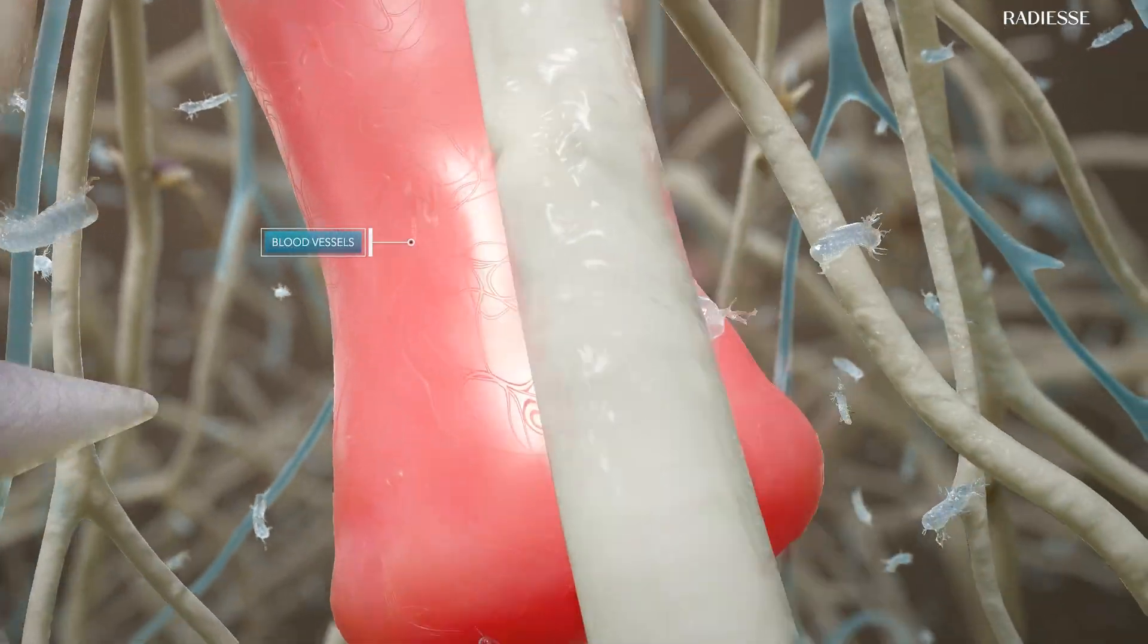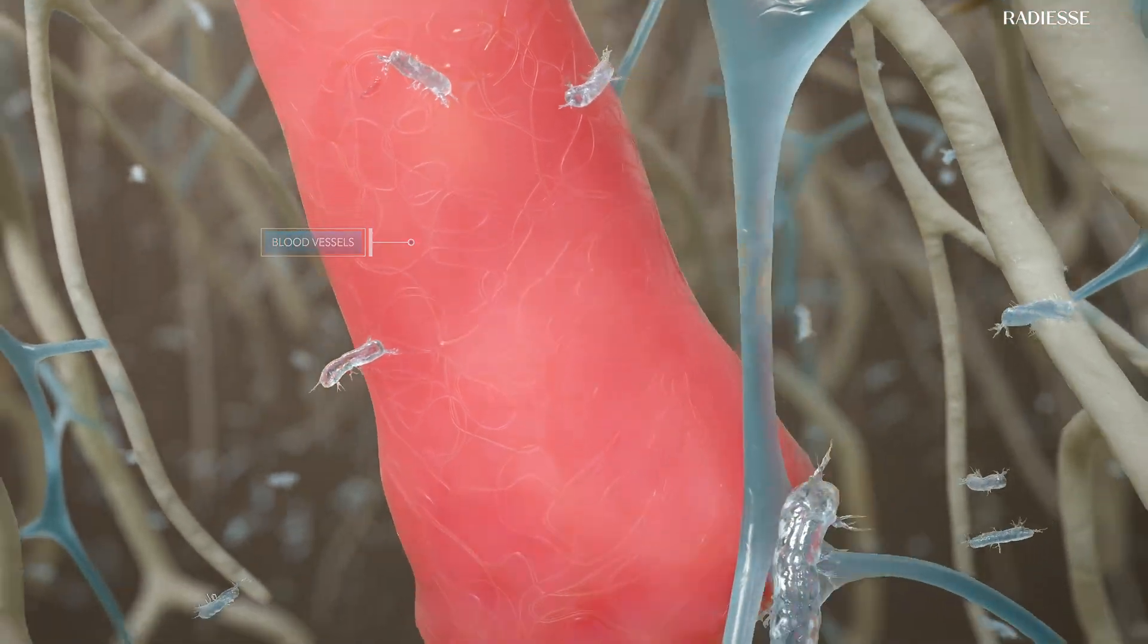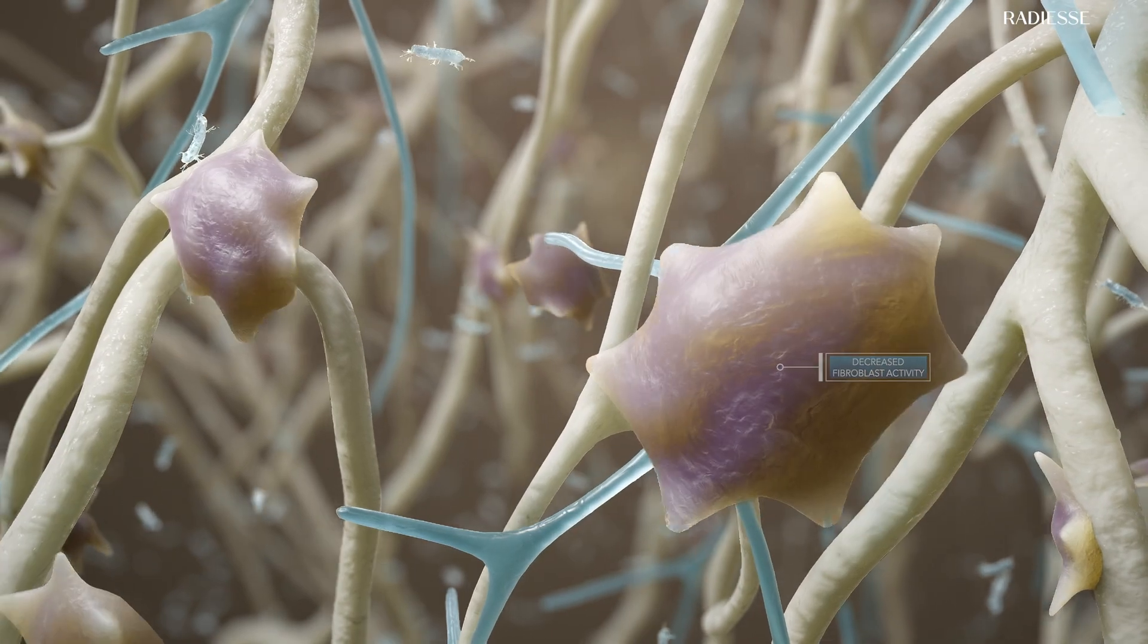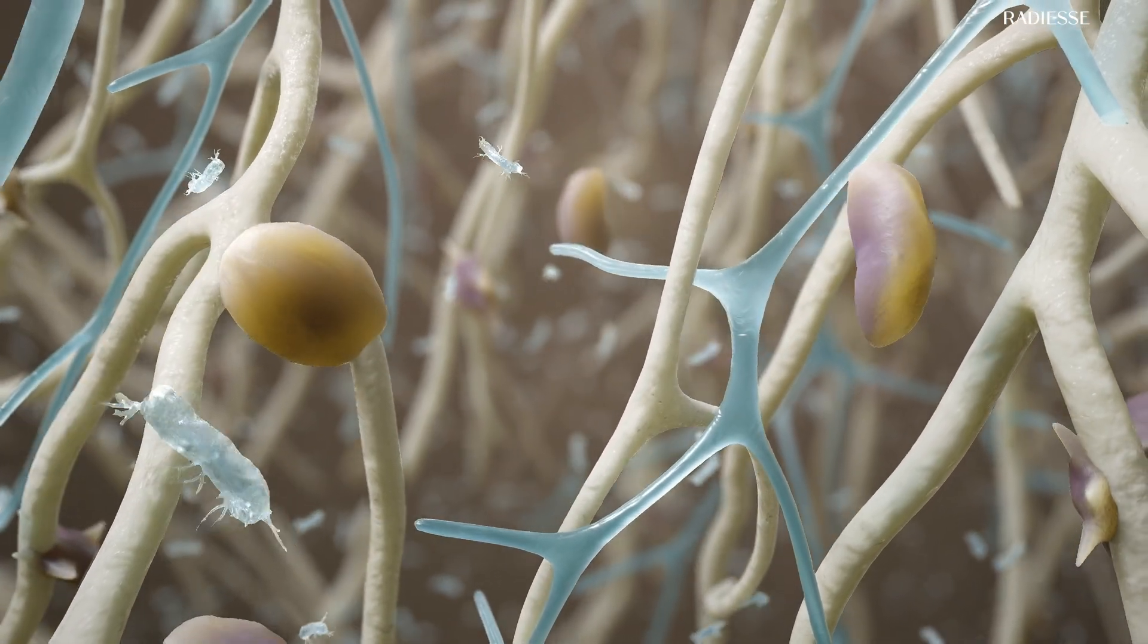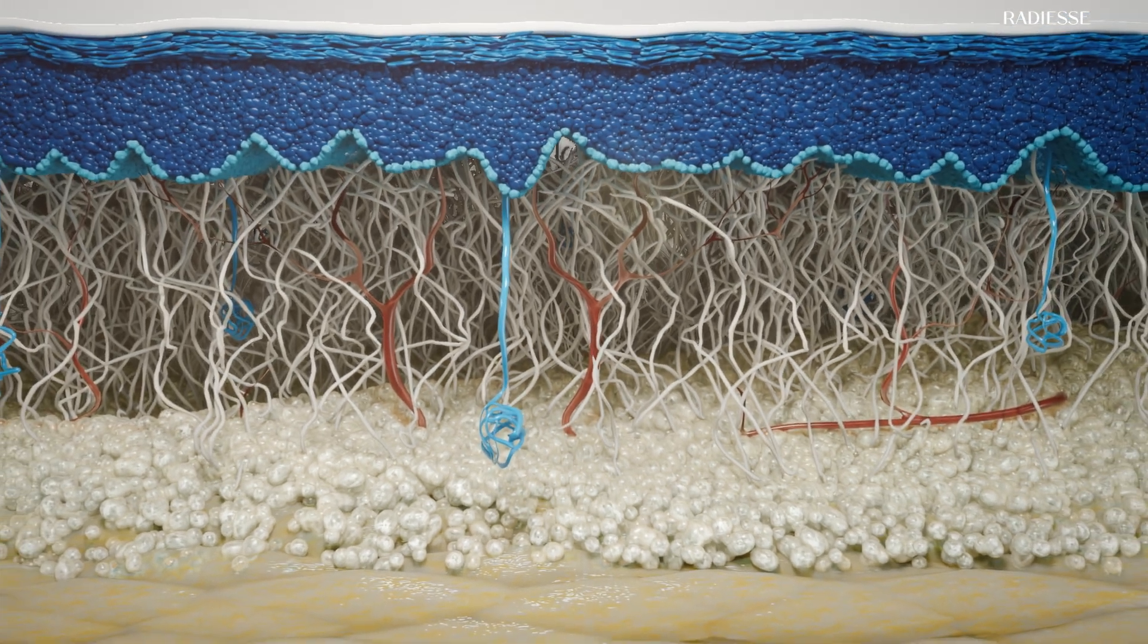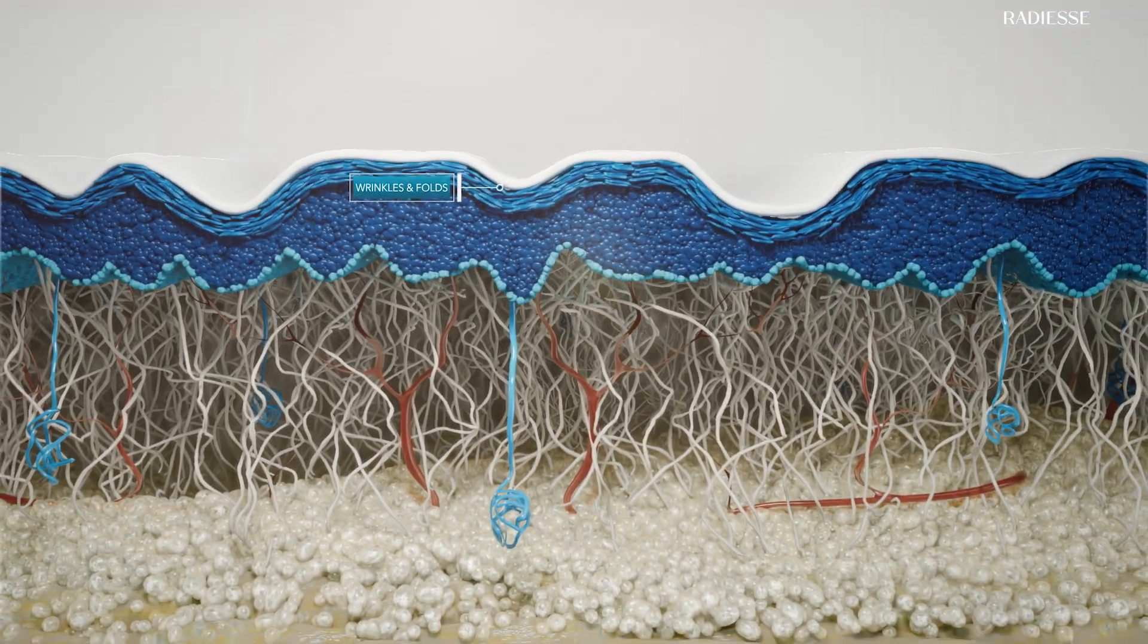As we age, a decrease in fibroblast activity and mechanical interaction reduce the production of ECM components, affecting ECM structure and weakening the skin's mechanical properties.